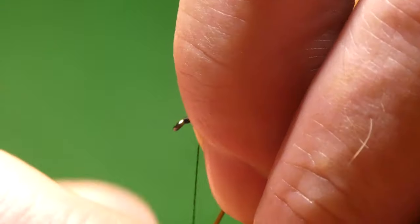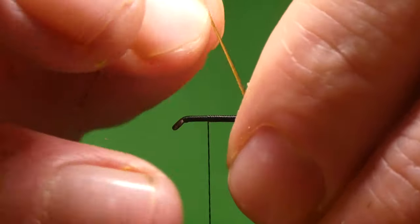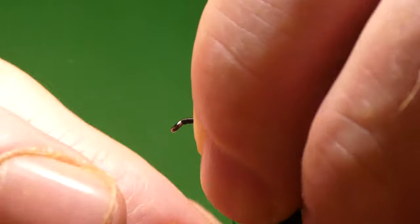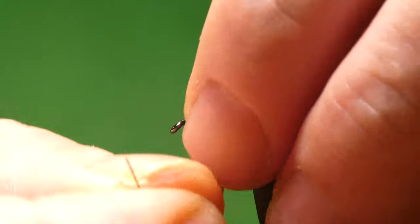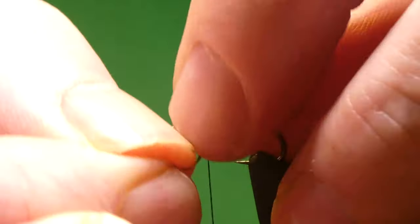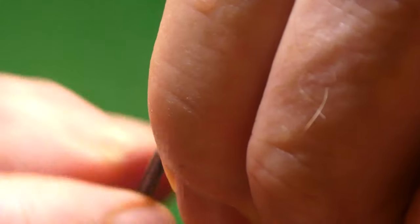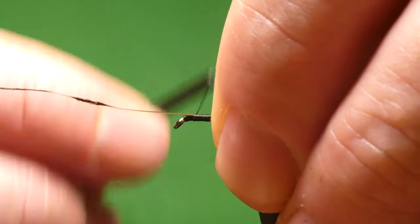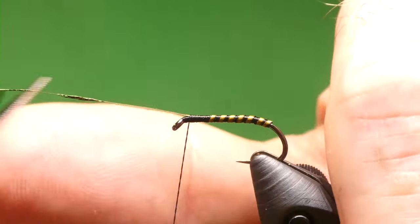Stop about there and then just start bringing the quill up with open turns. Keep it as even as you can. This is another simple fly, but they're really good, devastating. I love buzzer fishing.